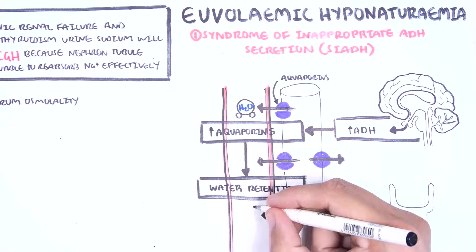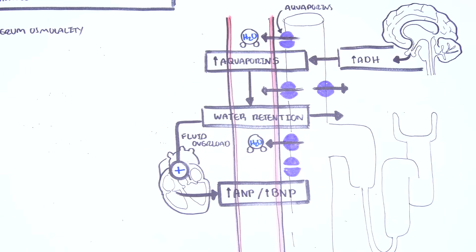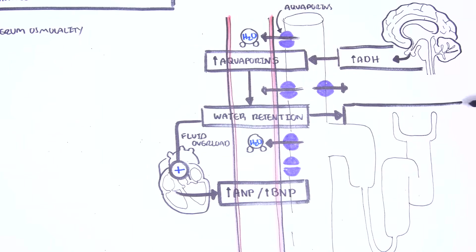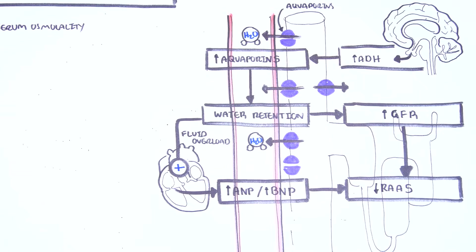Water retention leads to fluid overload, which stimulates the heart to release ANP and BNP — natriuretic peptides. Water retention also increases the glomerular filtration rate. Together with ANP and BNP, this decreases the renin-angiotensin-aldosterone system, because these hormones are telling the body not to retain any more water. Inhibition of RAAS means reduced aldosterone.